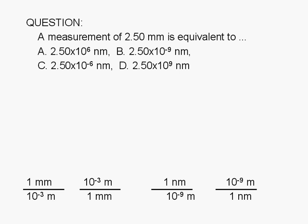You should know what the SI prefixes mean. The prefix milli means 1 over 1,000, or 10 to the negative 3. Therefore, we can write a conversion factor with 1 millimeter in the numerator and 10 to the negative 3 meter in the denominator. Or, we can write a conversion factor with 10 to the negative 3 meter in the numerator and 1 millimeter in the denominator.